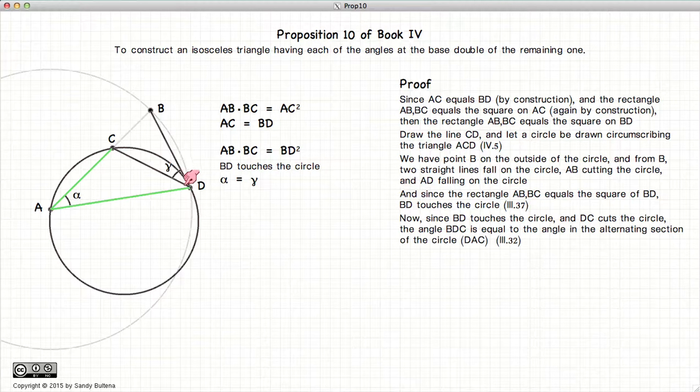Now since BD touches the circle, again going back to Book 3 and this time Proposition 32, if we have a line that touches a circle and another line that cuts through the circle, then the angle, in this case gamma, will be equal to the angle in the opposite segment. In other words, alpha. So we have that alpha and gamma are equal. Again, if you wish to refresh your memory, you can always go back and look at Proposition 32 Book 3.